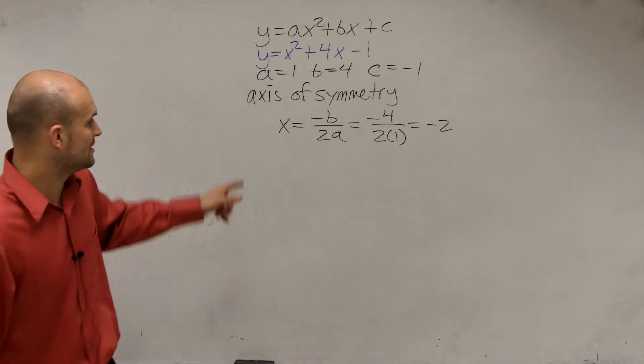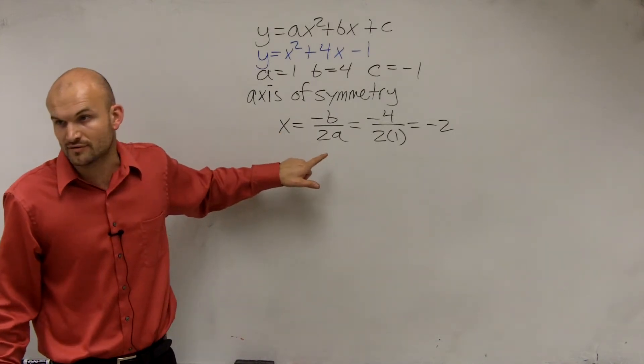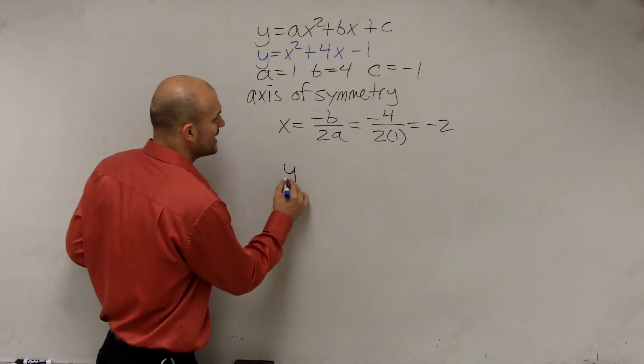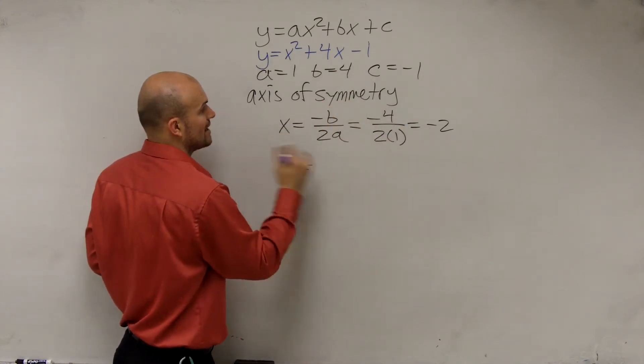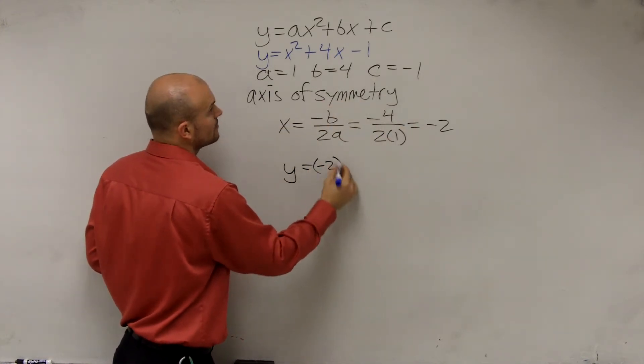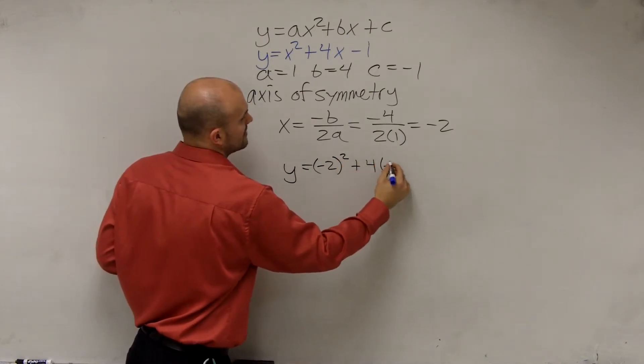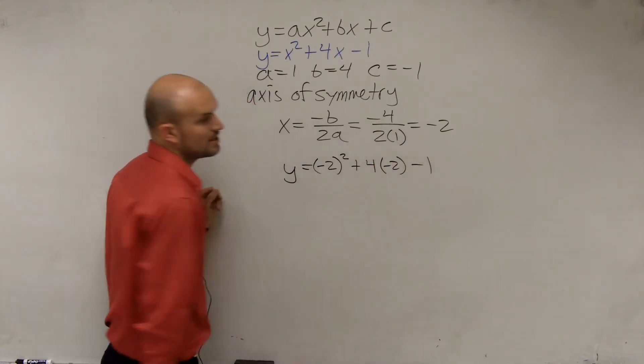Then, to find the vertex, remember, ladies and gentlemen, this is the x-coordinate of the vertex. So to find the y-coordinate of the vertex, you plug in this value in for x. So you say negative 2 squared plus 4 times negative 2 minus 1.